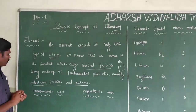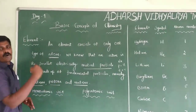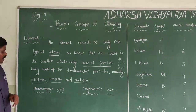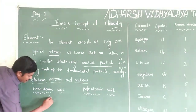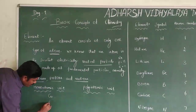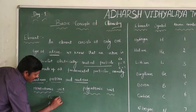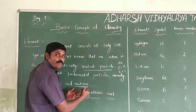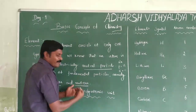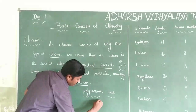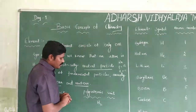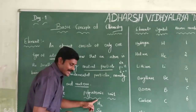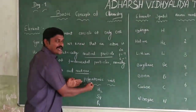An element consists of monoatomic units and polyatomic units. Examples of monoatomic units: Copper (Cu), Gold (Au), Sodium (Na), Helium (He). Examples of polyatomic units — more than one atom — such as Hydrogen H₂, Sulfur S₈, and Phosphorus P₄.